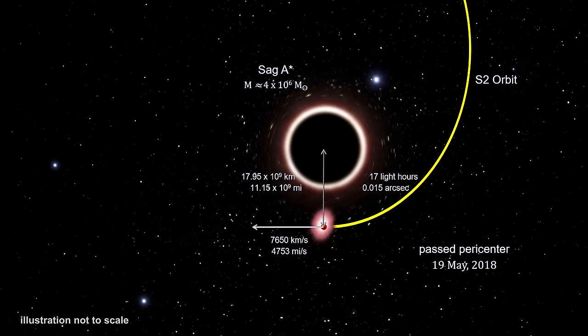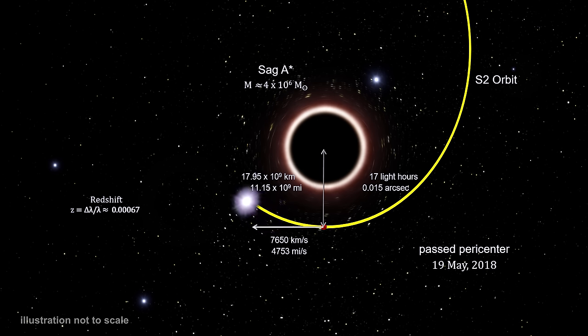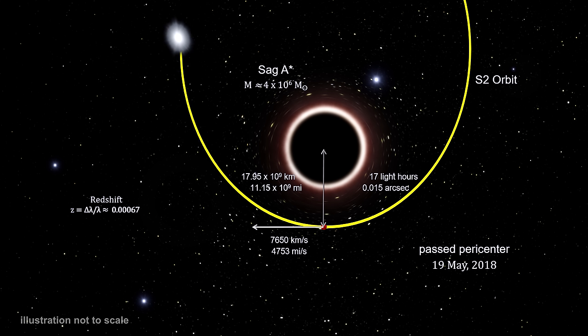Its distance from the black hole was just 18 billion kilometers, or 11 billion miles — only 120 times our distance from the sun. The separation on the sky between the two points was just 15 milli-arc-seconds. It was also reddening in color as the black hole's gravitational field stretched its light to longer wavelengths. The color change in this illustration is exaggerated for effect; the actual reddening is quite small and would not be visible to the naked eye. S-2's velocity changes close to the black hole were in excellent agreement with the predictions of general relativity, and the change in light wavelength agreed precisely with what Einstein's theory predicted.